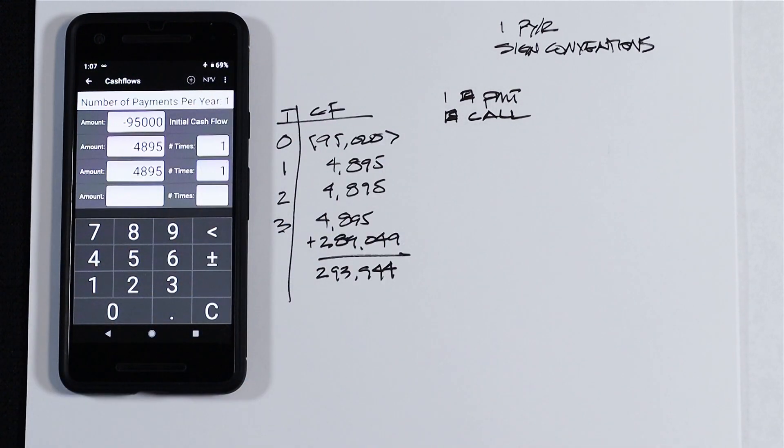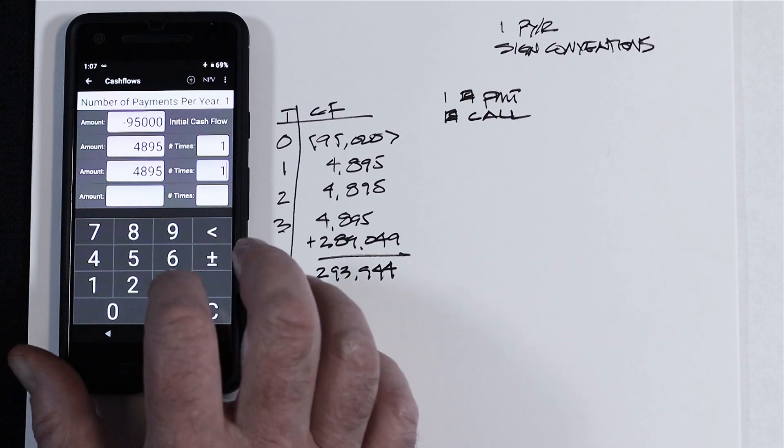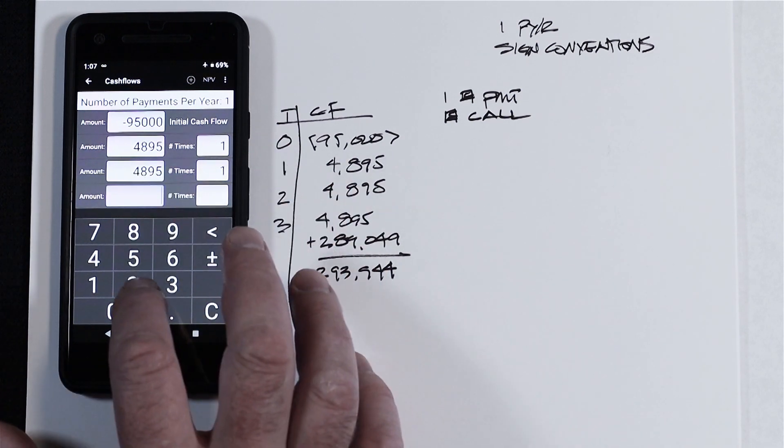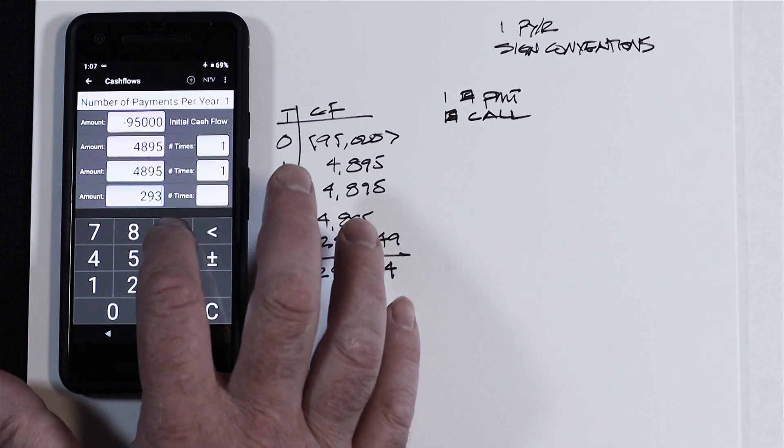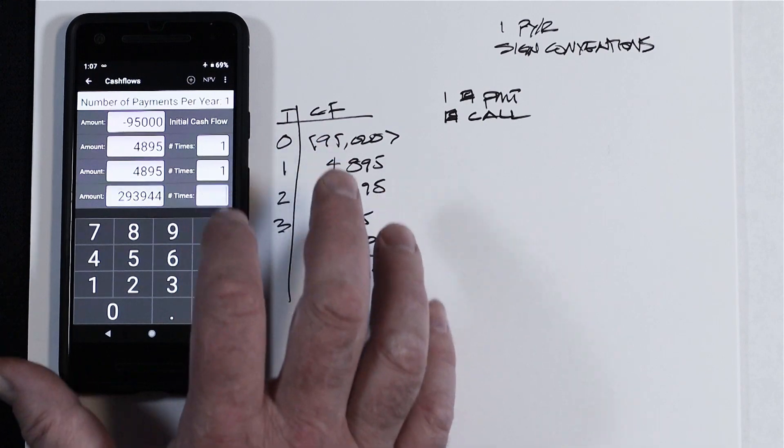Create one more row. And here, for time period three, this is where we're going to enter the 293,944. Tap in, 293,944. Number of times is one.